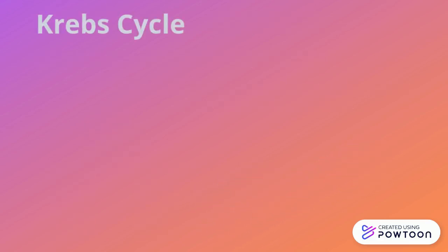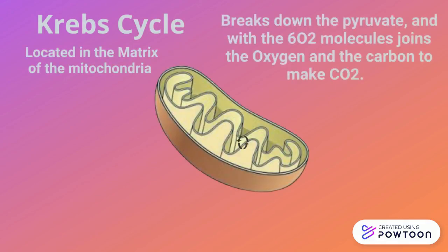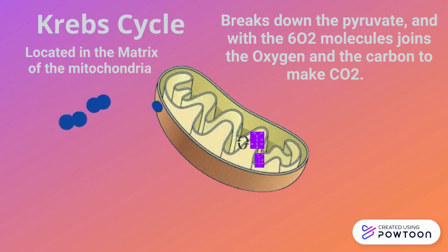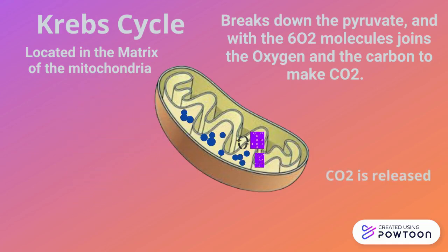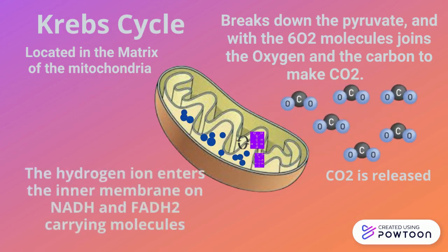Now entering the mitochondria is the Krebs cycle, which is located in the matrix. It breaks down the pyruvate and with six oxygen molecules joins the oxygen and the carbon to make CO2 that is then released from the body. The hydrogen ion enters the inner membrane on the NADH and FADH2 carrier molecules.